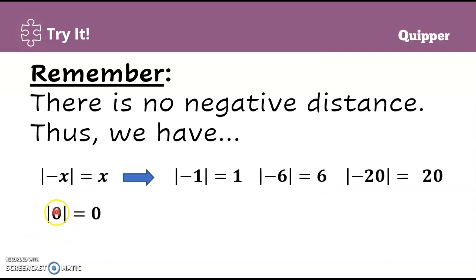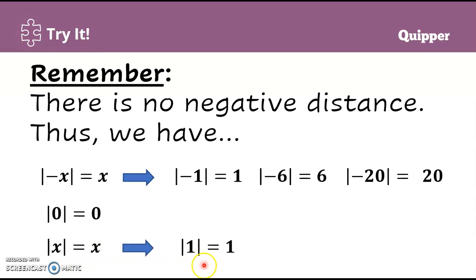Next, the absolute value of 0 is 0, because the distance of 0 from itself is 0. Next, for the absolute value of a positive number: the absolute value of x is x — the absolute value of a positive number is equal to that number. For example, the absolute value of 1 is 1, the absolute value of 6 is 6, and the absolute value of 20 is 20.